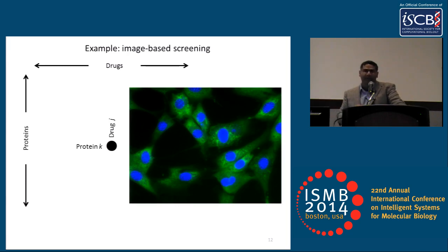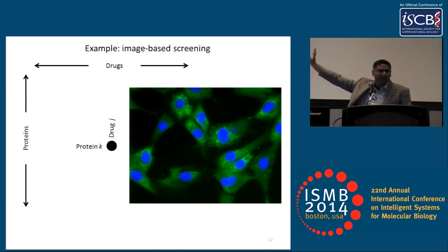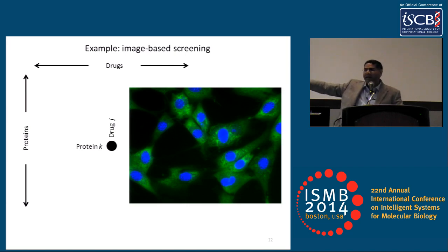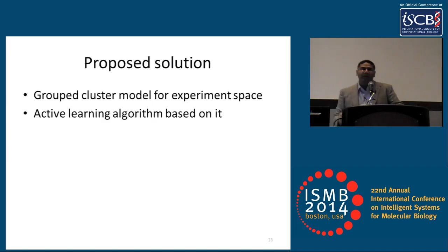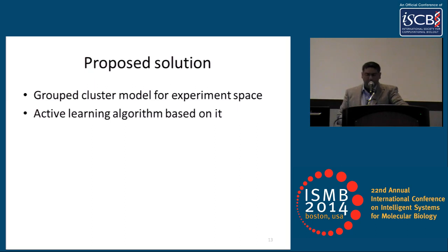A canonical example of this challenge is image-based screening. In image-based screening, I would observe the localization of some fluorescent reporter in the cell — say, protein K tagged with GFP — under some drug. These data are naturally high-dimensional, and the general way we'd represent them is in some very high-dimensional feature space. Our proposed solution is to treat this in two steps: first, build a grouped clustering for the experiment space, which gives us a predictive model, and then with these predictions, build an active learning algorithm for this problem.